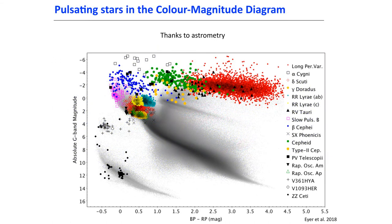Thanks to the astrometry, we can take the data and put it in the color magnitude diagram. There you have the different types located in the HR diagram. You can see Cepheids, RR Lyrae, Gamma Doradus stars, pulsating white dwarfs, and these groups are located in the diagram.